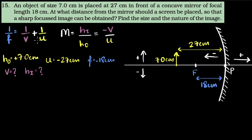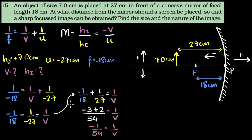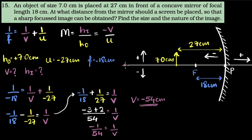Now is a good time to pause and try on your own first. Substituting: 1 over minus 18 equals 1 over v plus 1 over minus 27. After doing the algebra, we get 1 over v equals minus 1 over 54, which means v equals minus 54 centimeters. That means the image is 54 centimeters to the left — that's where we have to keep the screen in order to obtain a sharp image.